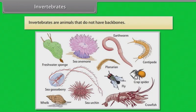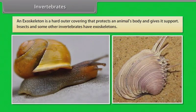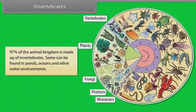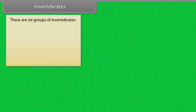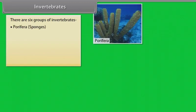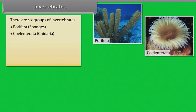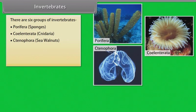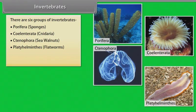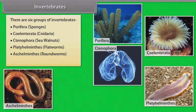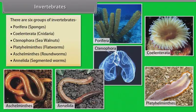Invertebrates are animals that do not have backbones. An exoskeleton is a hard outer covering that protects an animal's body and gives it support. Insects and some other invertebrates have exoskeletons. 97% of the animal kingdom is made up of invertebrates. Some can be found in ponds, oceans and other water environments. There are six groups of invertebrates: Porifera (sponges), Cnidaria (jellyfish), Ctenophora (sea walnuts), Platyhelminthes (flatworms), Aschelminthes (roundworms), and Annelida (segmented worms).